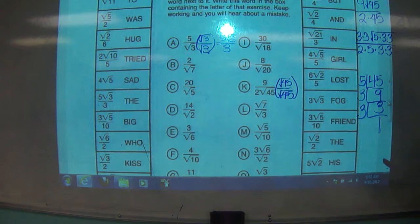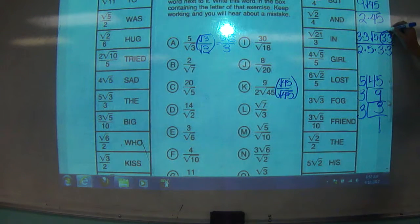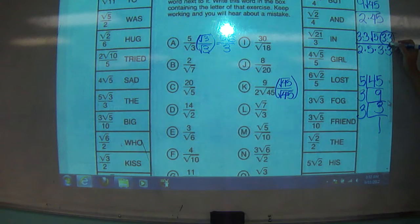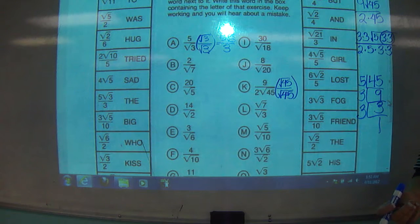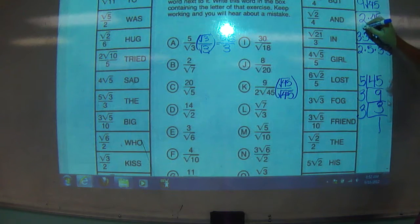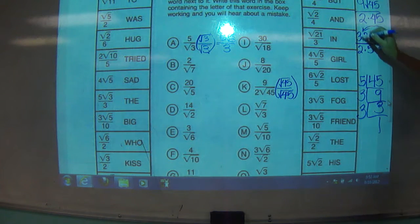To simplify a square root, any time you have 2 of the same factor, they can get out of square root jail. So these guys, if we have two square root threes, because square root three times square root three is one regular three, we've already discovered that, correct? So they can get out of square root jail.